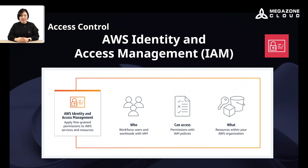AWS Identity and Access Management, IAM, is a fundamental service that manages user access to AWS resources. It allows you to create and manage users, groups, and roles, and define their permissions. IAM provides access controls that grant or deny access to specific resources or actions. It helps ensure that only authorized users can access your AWS services and resources. IAM is a crucial component in securing your AWS infrastructure and maintaining proper access controls.